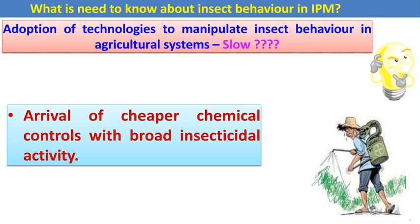What is the need to understand insect behavior in integrated pest management? The adoption of technologies to manipulate insect behavior in agriculture systems is currently very slow. The arrival of cheaper broad-spectrum chemical controls is one of the reasons behind this slow application of insect behavior techniques in pest management.